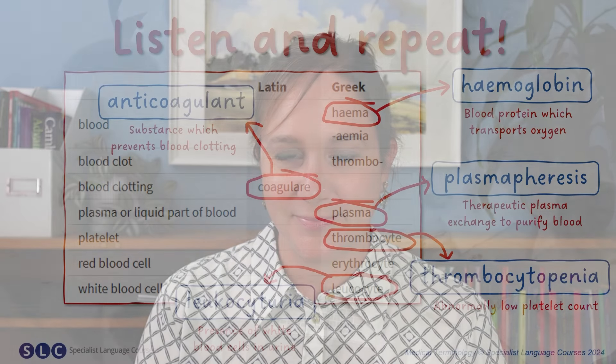Some of those terms were quite tricky to pronounce, so let's practice. Listen and repeat: hemoglobin, anticoagulant, plasmapheresis, thrombocytopenia, leukocyturia. And don't forget to mark the stressed syllable. Which words did you find the most difficult to pronounce? Let me know in the comments below.